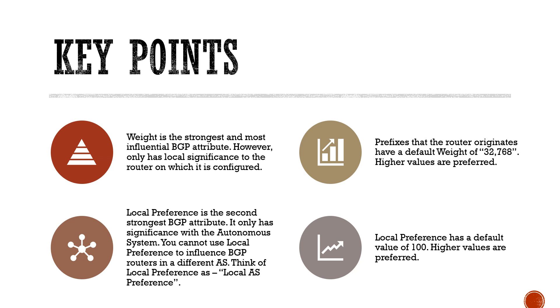Prefixes that the router originates have a default weight of 32,768. It's very important to note that BGP prefers higher values when it comes to weight. The higher the weight, the more influential and more preferential that path is.